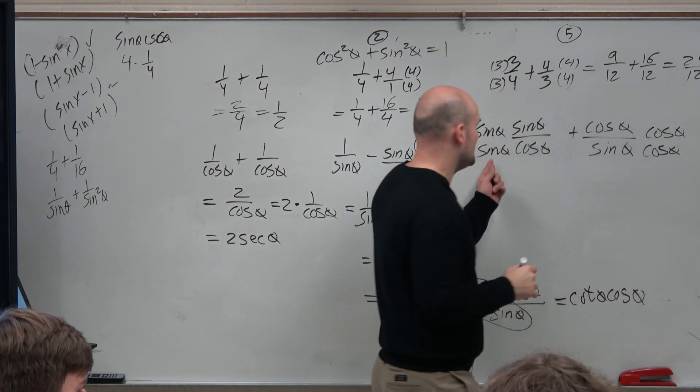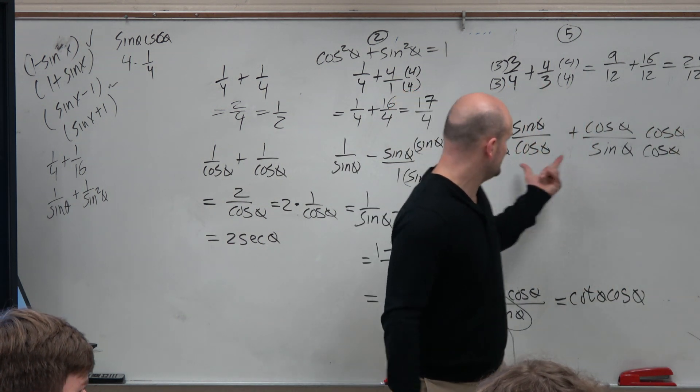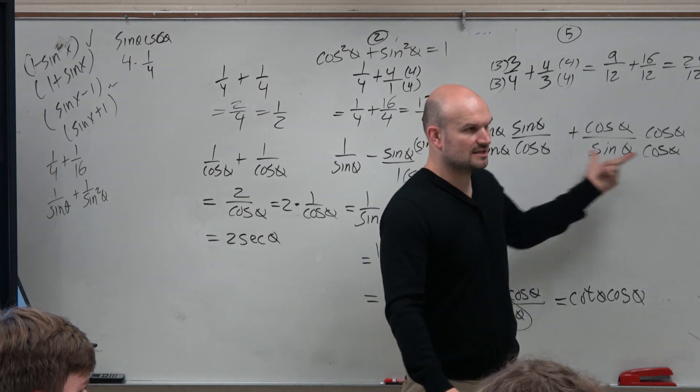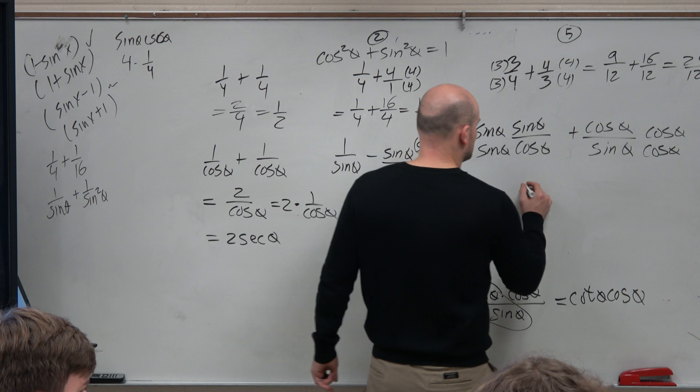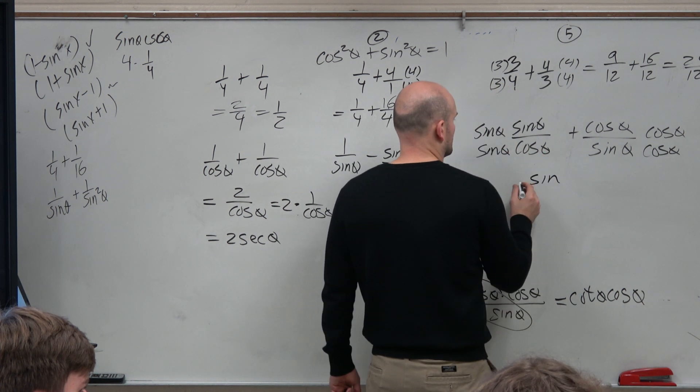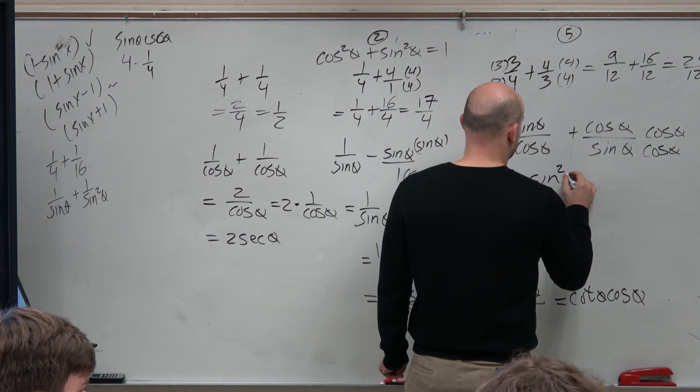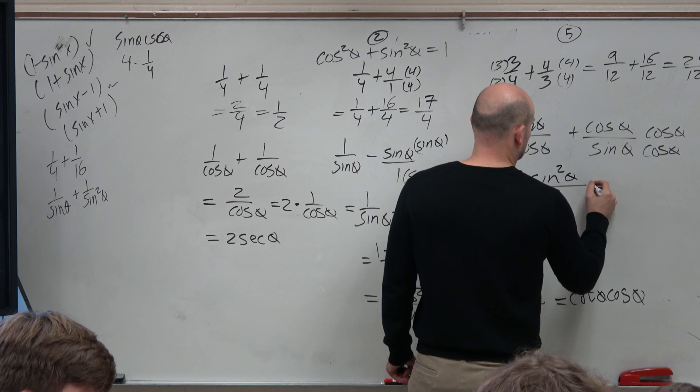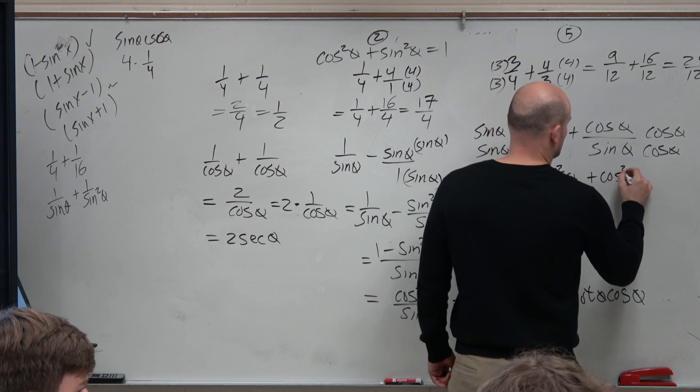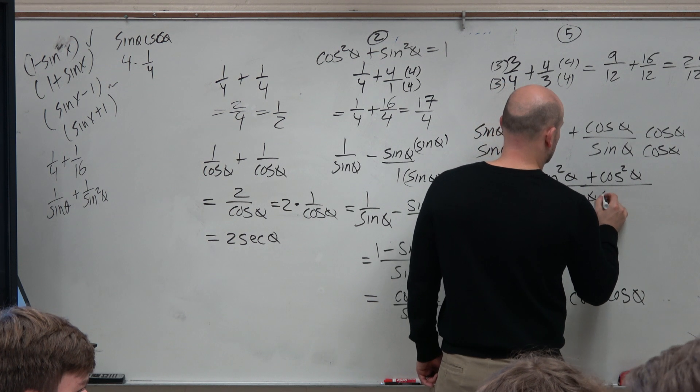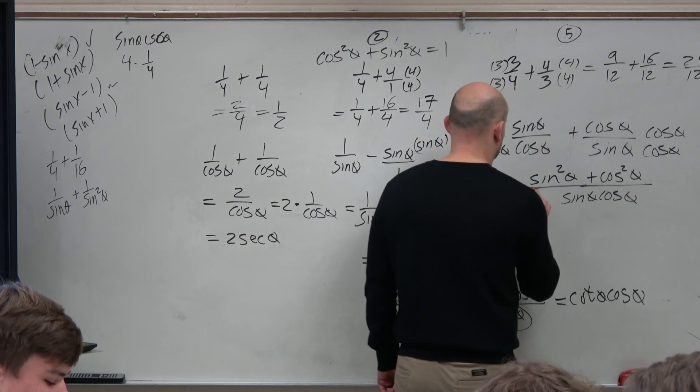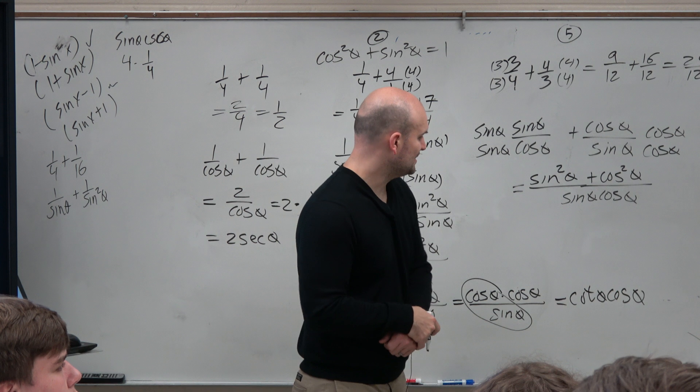So when I multiply by a sine of theta on the left side and a cosine of theta on the right side, do you guys see how my denominators are not exactly the same, right? So now I'm left with a sine squared of theta plus a cosine squared of theta all over the same denominator, which is sine of theta cosine of theta. I'm just combining them because I have a little bit of lack of space.